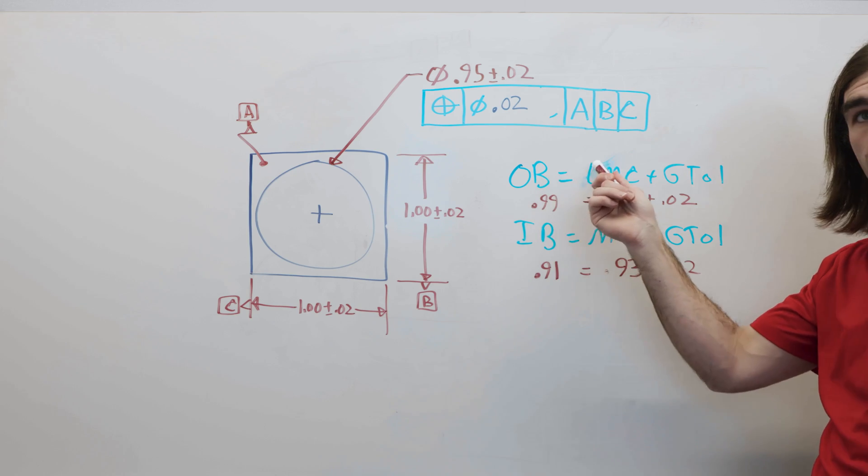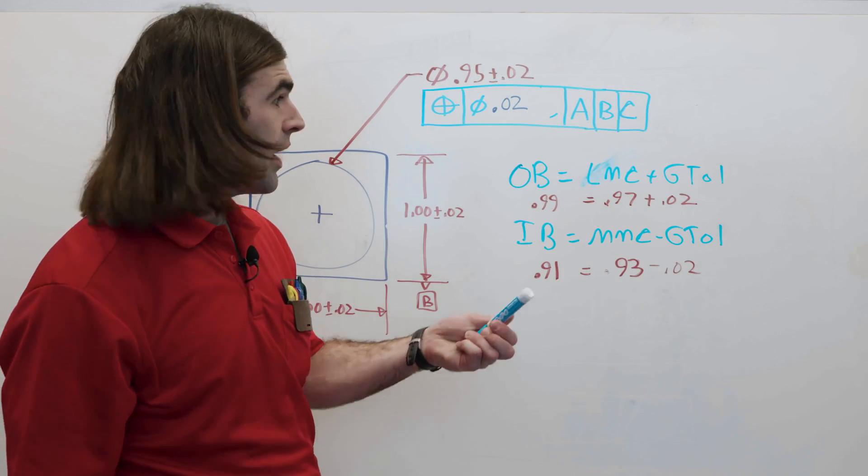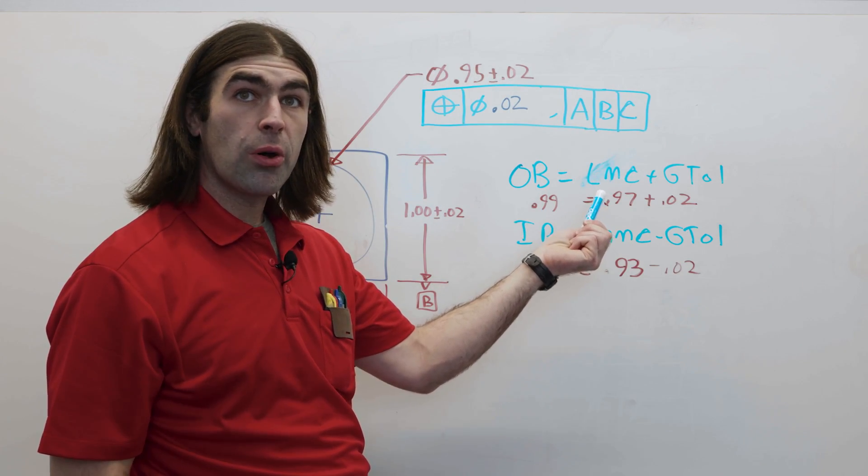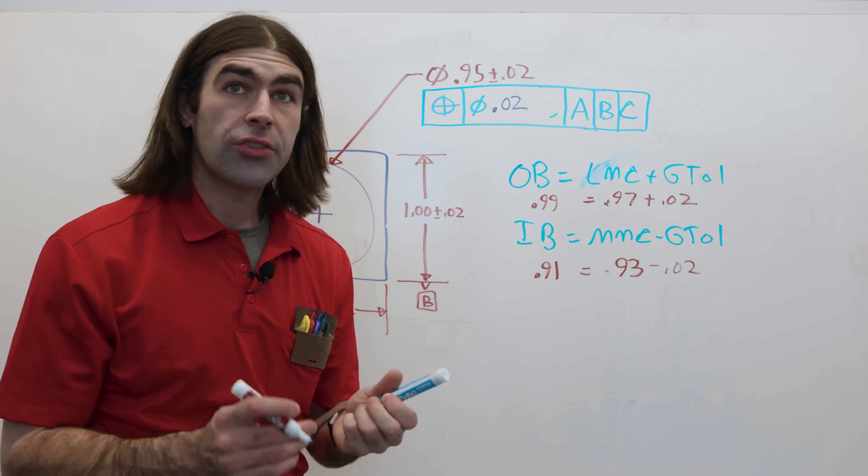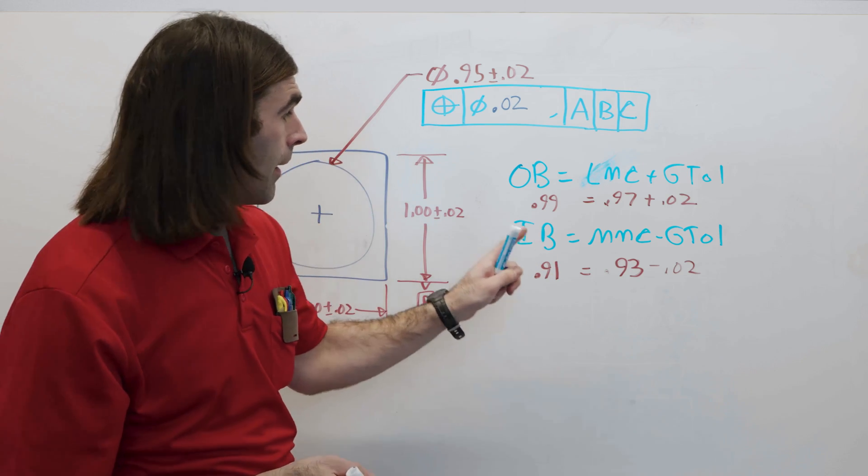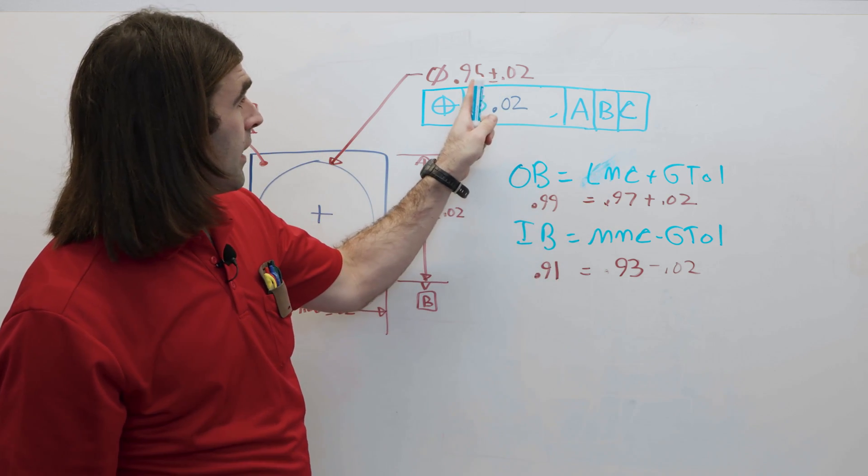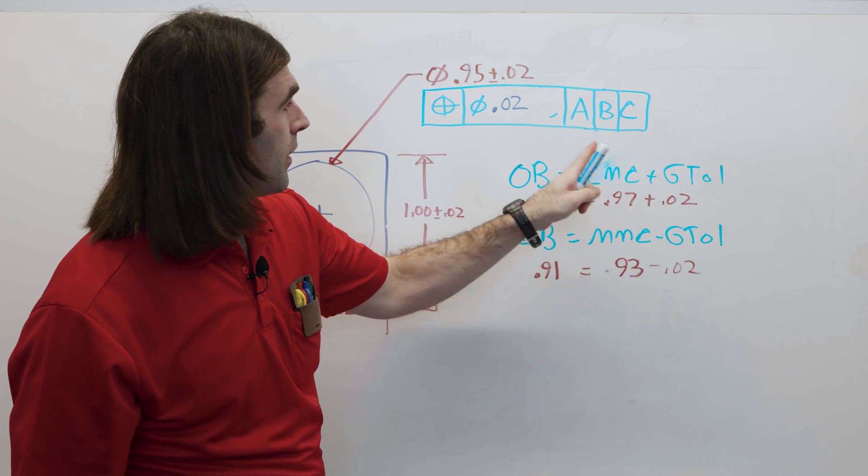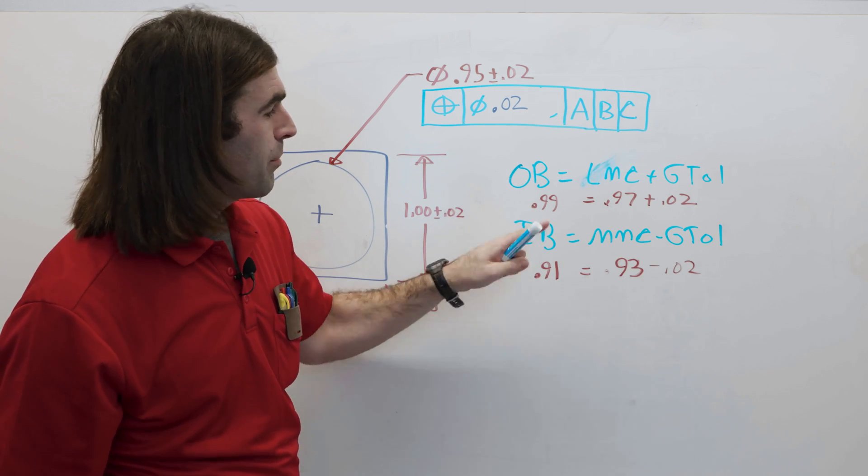The equation for the inner and outer boundary is very simple. Outer boundary is the largest the hole can be, so the LMC, plus the geometric tolerance, so that axis tilt we were just talking about. So, in this case, it's 0.97, the largest hole can be, plus the geometric tolerance, 0.99.